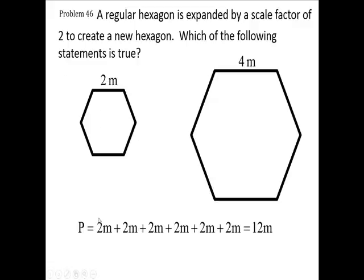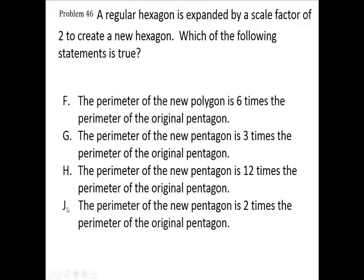So if I double one of these 2s and make the bigger one, instead of having 2, I'm going to have 4, 4, 4—6 fours, which will be 24. So the perimeter of the new one will be double the old one. So of my 4 choices, I'm going to pick J.